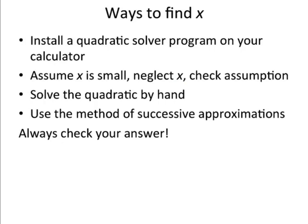One, if it's a second order polynomial and you do the algebra and find a, b, and c, I'm happy if you put a quadratic solver in your calculator. Another way is assume that x is small and you can neglect x when you're adding or subtracting it, and that simplifies your algebra. Another way is just solve the quadratic formula by hand. And then the new way we're going to talk about here is how to use the method of successive approximations to get to your answer. Let me scoot these over to the side so we can keep track of what we're doing.